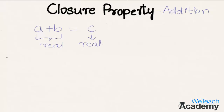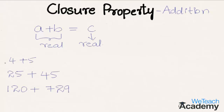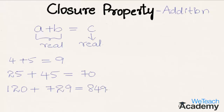Let us discuss a few examples. In the first example, 4 is added to 5 — both real numbers — and we get their sum as 9, which is also a real number. Then 25 added to 45 gives 70, and 120 added to 729 gives 849. Since all numbers here are real numbers, closure property on addition is a closed operation.